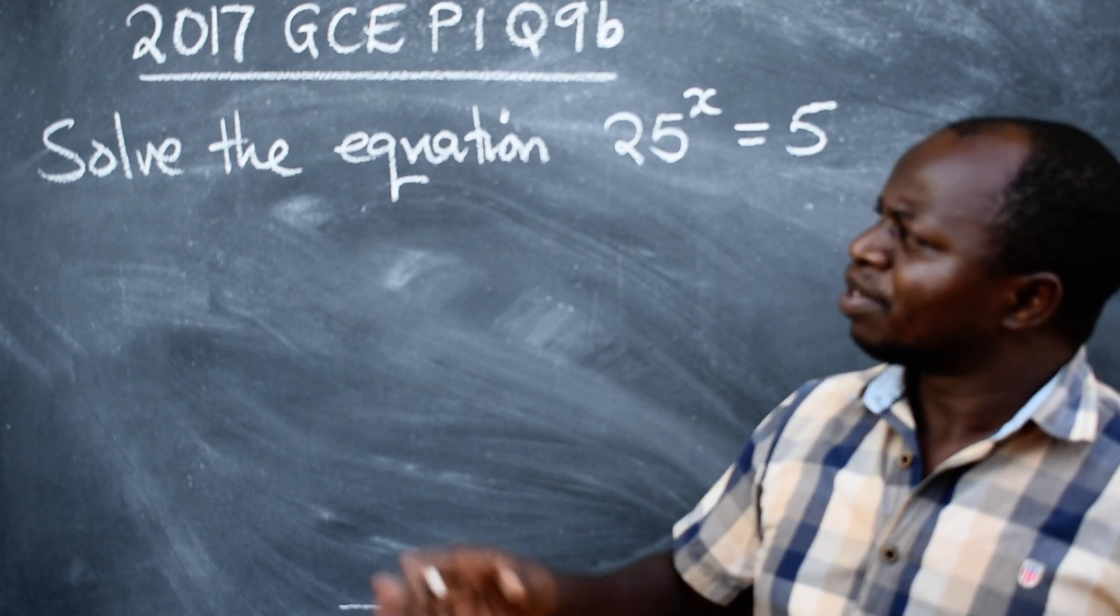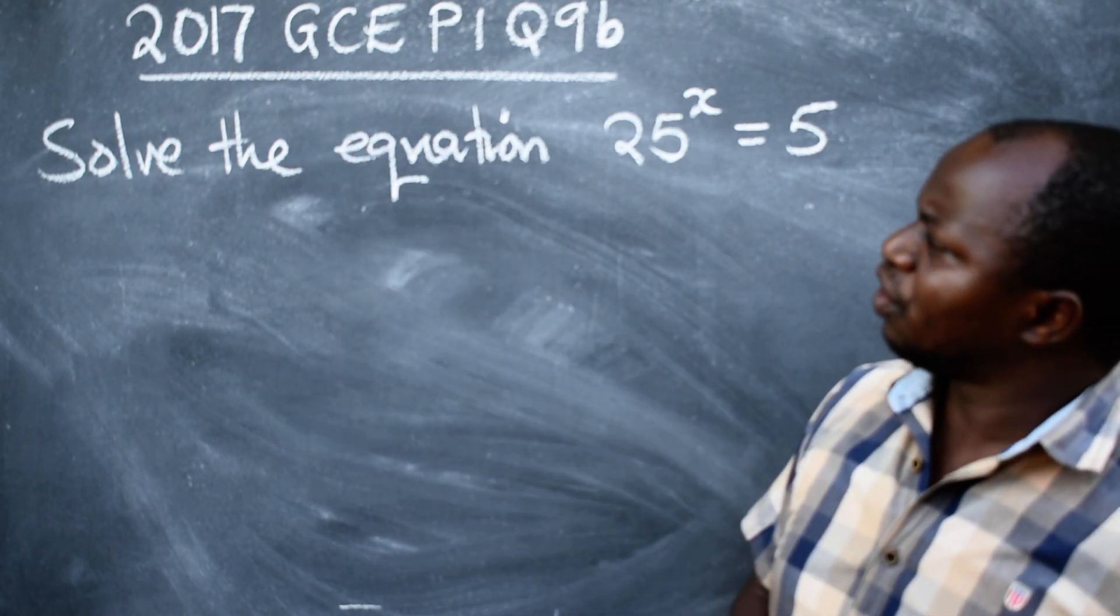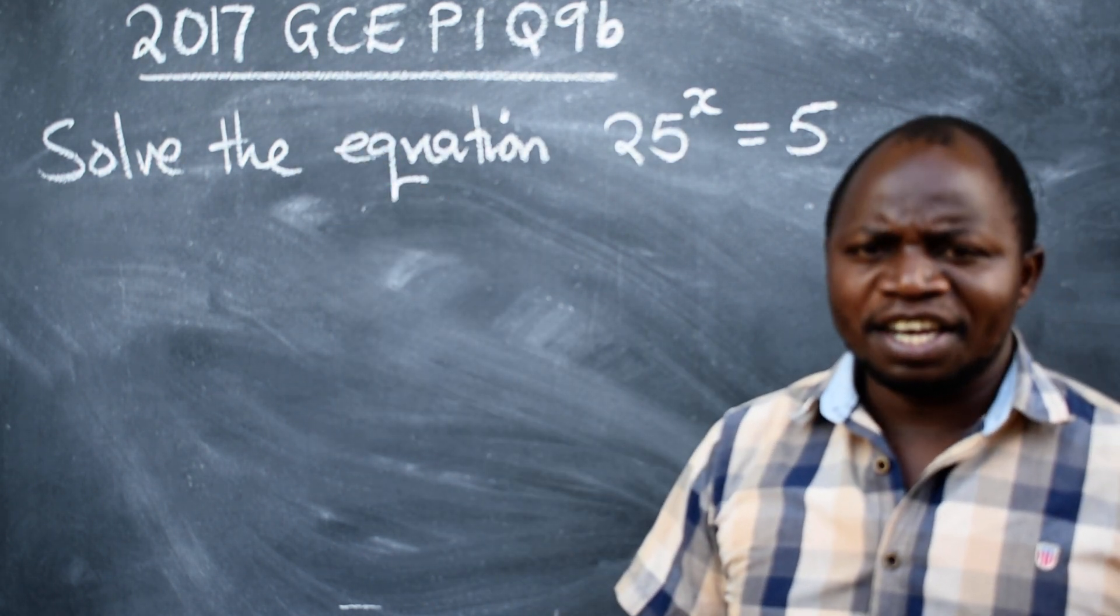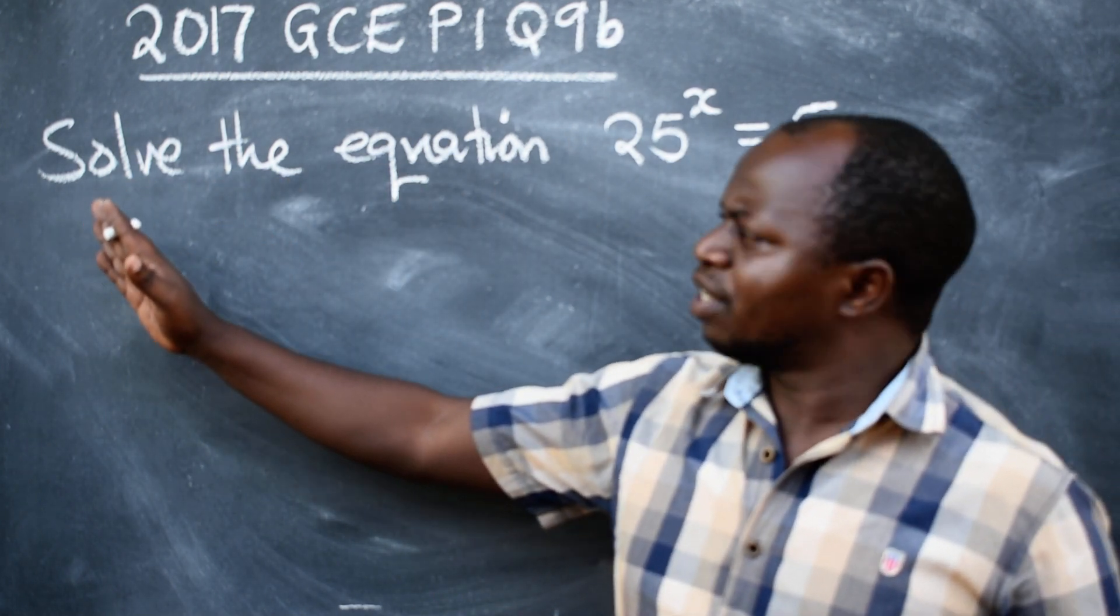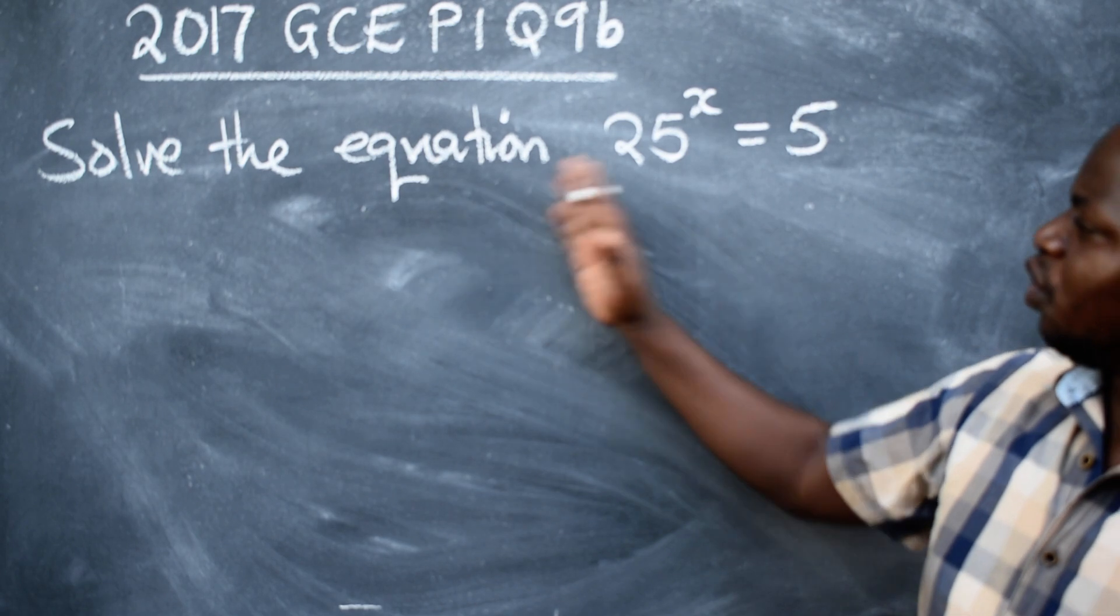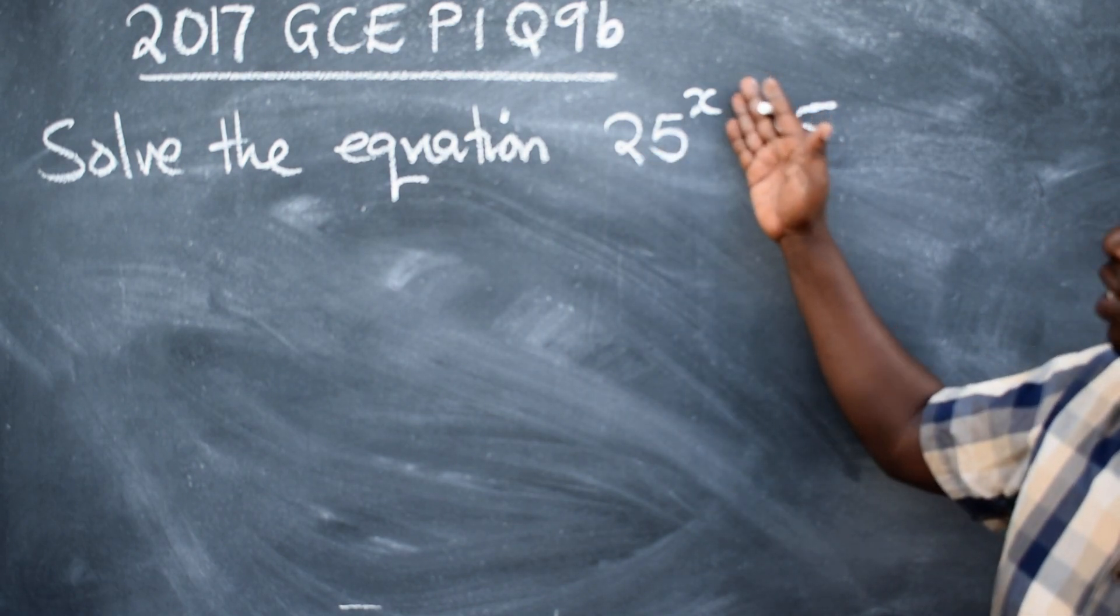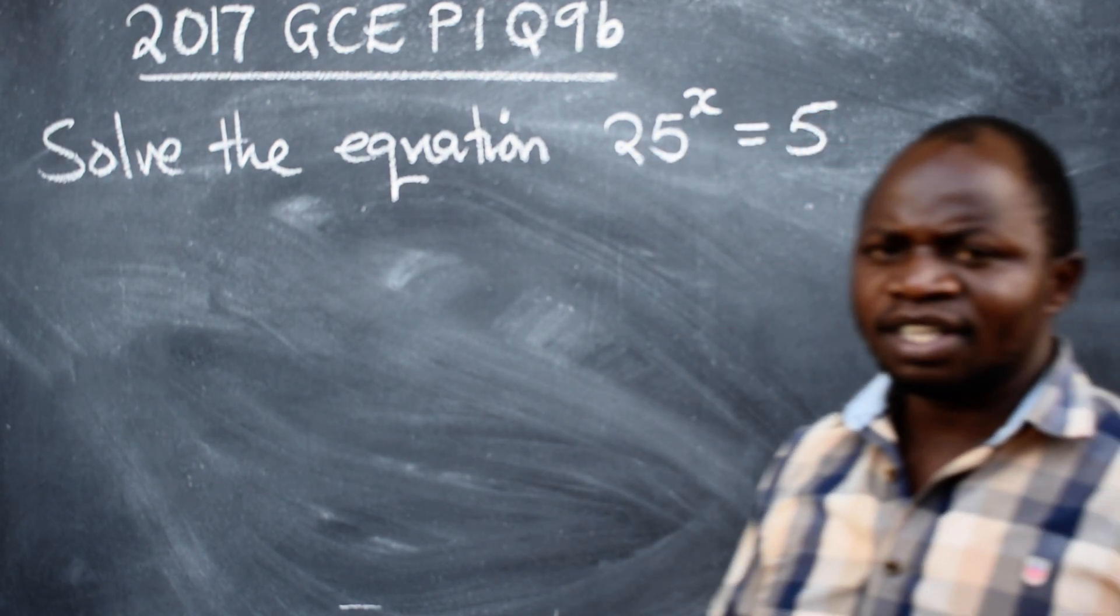It's coming from the 2017 GCE paper one, question number 9b. The question was, solve the equation 25 raised to the power x is equal to 5.